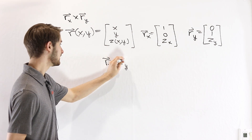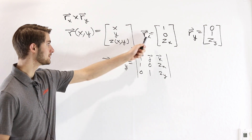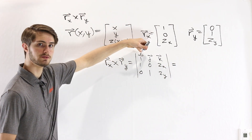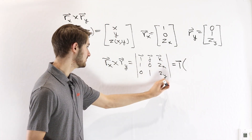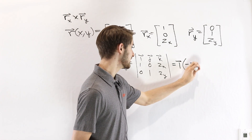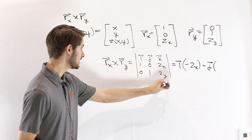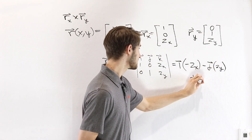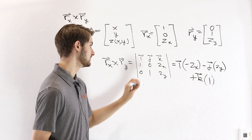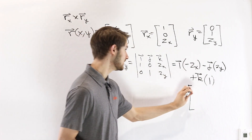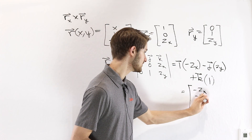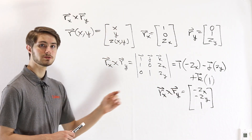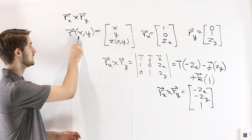Now we can plug these two vectors into our cross product r_x cross r_y. That's the determinant with i, j, k in the first row, r_x in the second row, and r_y in the third row. Expanding along the first row, we get: i times (0·z_y − z_x·0), minus j times (1·z_y − z_x·0), plus k times (1·1 − 0). Turning this back into a vector, the x component is −z_x, the y component is −z_y, and the z component is 1. This is the formula for r_x cross r_y whenever we have a parametrization in terms of x and y.